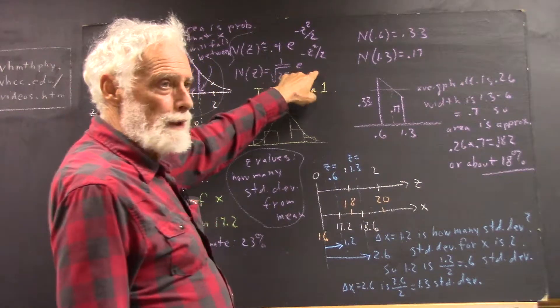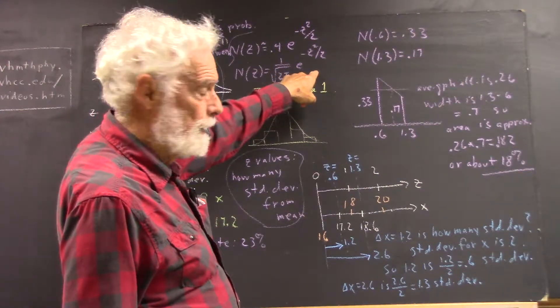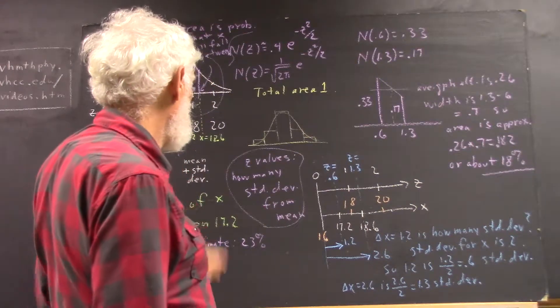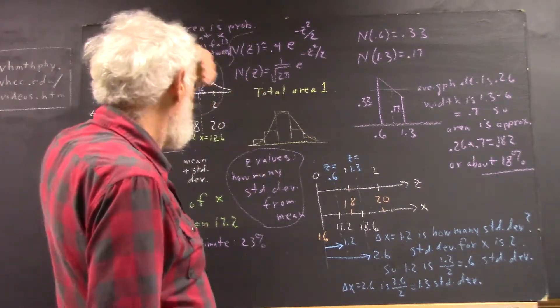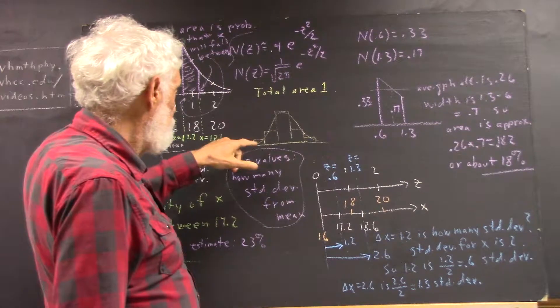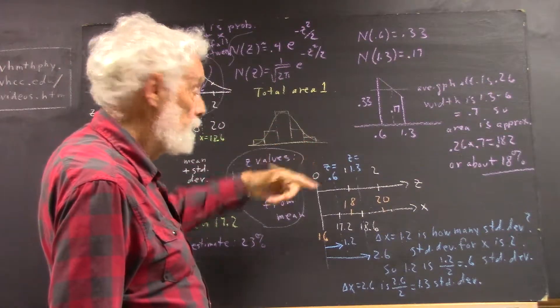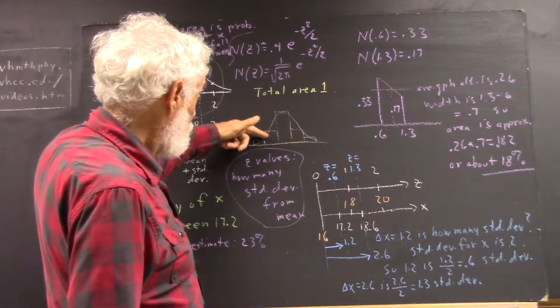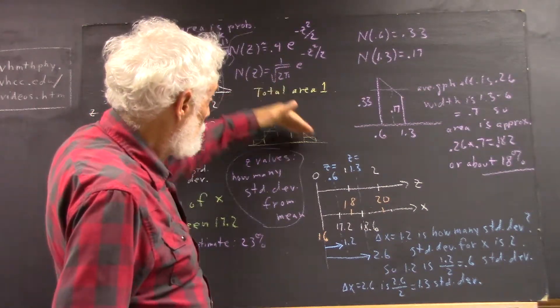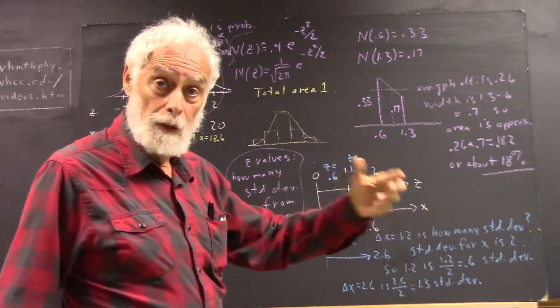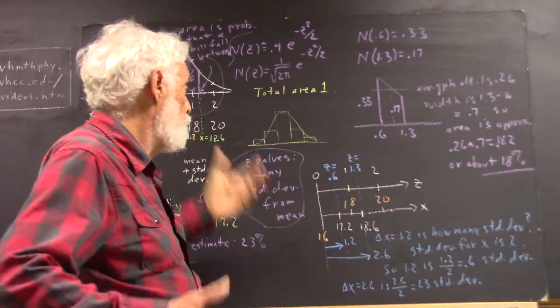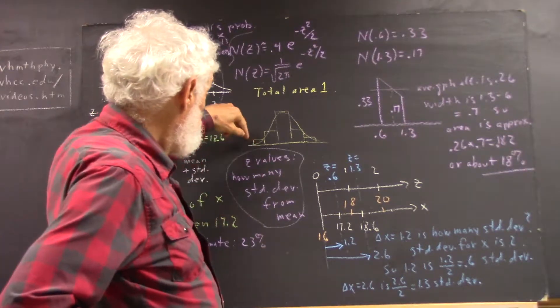This is derived by a lot of fairly complicated mathematics that's well beyond where anybody is right now, so we can't discuss it, but it's really just what you get if you take a histogram of the number of heads for a large number of flips. This is not a large number of flips, but you see how a normal curve might fit the histogram for the number of heads on flips of 4 coins or something like that.